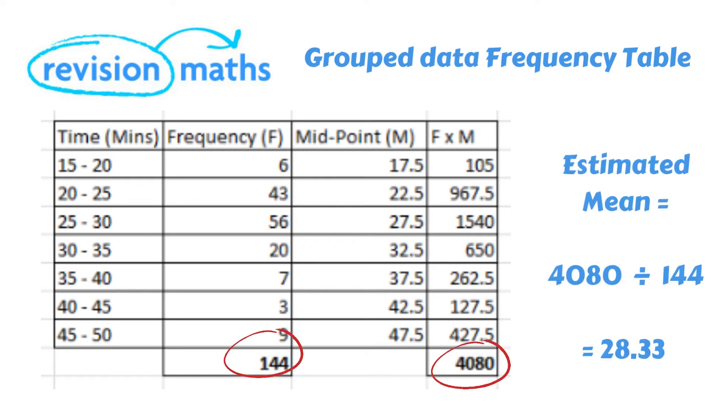We now work out the estimated mean by dividing the total time in minutes for all park runners in this case 4080 minutes by the total number of runners which was 144. This gives us an estimated mean of 28.33 minutes.